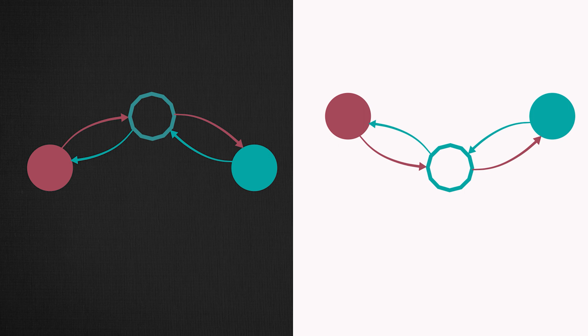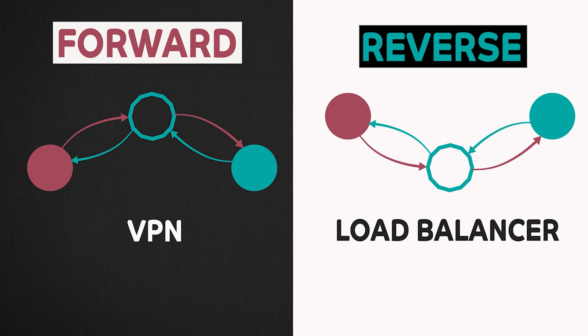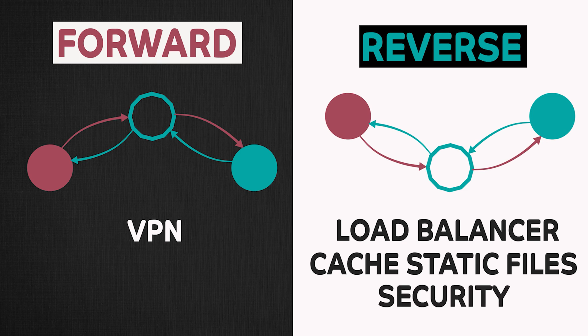To summarize, a proxy is a server. There are two types: forward proxy and reverse proxy. Forward proxy is a client side proxy where the server has no idea about it, and so the forward proxy can help the client conceal its identity and bypass firewall restrictions. Reverse proxy is configured by the server, which the client has no idea about. Reverse proxy has numerous applications. It can act as load balancer, can cache static files, and it can also provide additional security to the destination server.